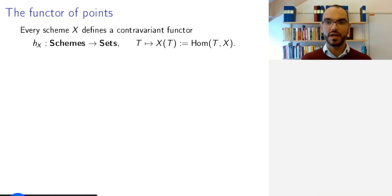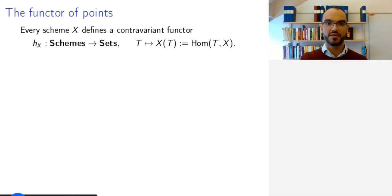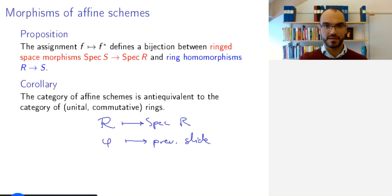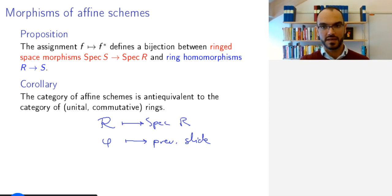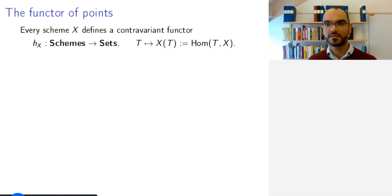There is one other point of view I want to touch upon briefly: the functor of points. Now that we have these functoriality statements, one might think about embedding the category of schemes into some category of functors. If you find schemes defined in terms of prime ideals somewhat tricky but you like functors, this is for you.